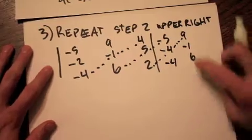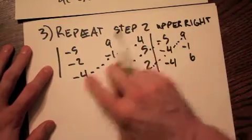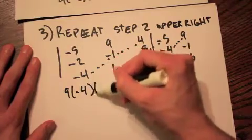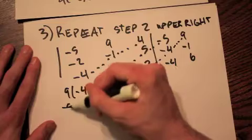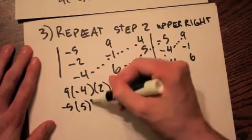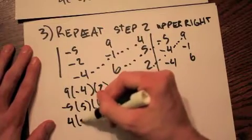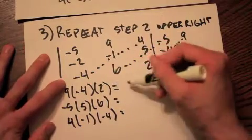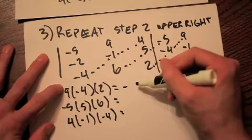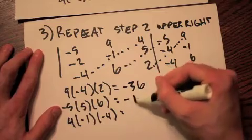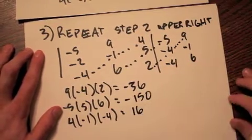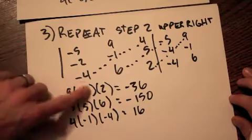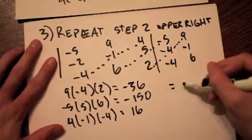Just like before, we're going to multiply these numbers and add together those three products. So we've got 9 times negative 4 times 2, then negative 5 times 5 times 6, and then 4 times negative 1 times negative 4. This product is going to give us negative 36, this one is going to give us negative 150, and this one is going to give us positive 16. Adding these three numbers together gives us negative 170.